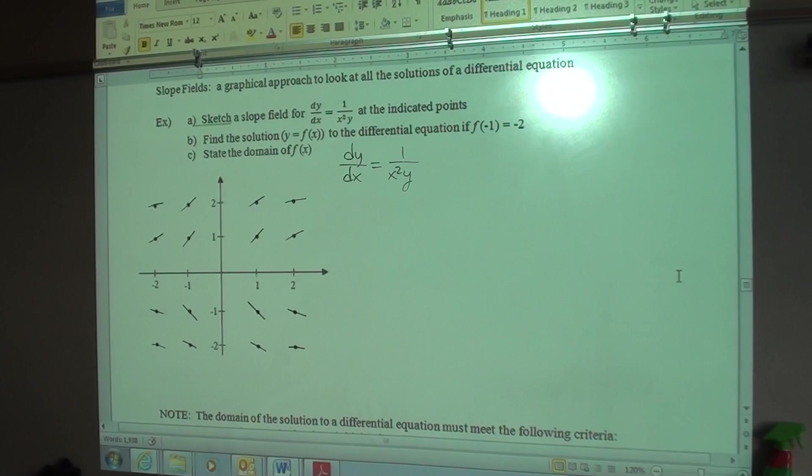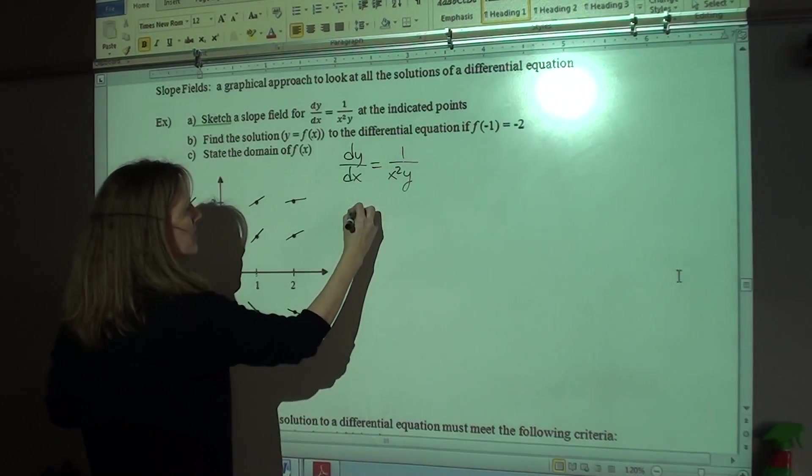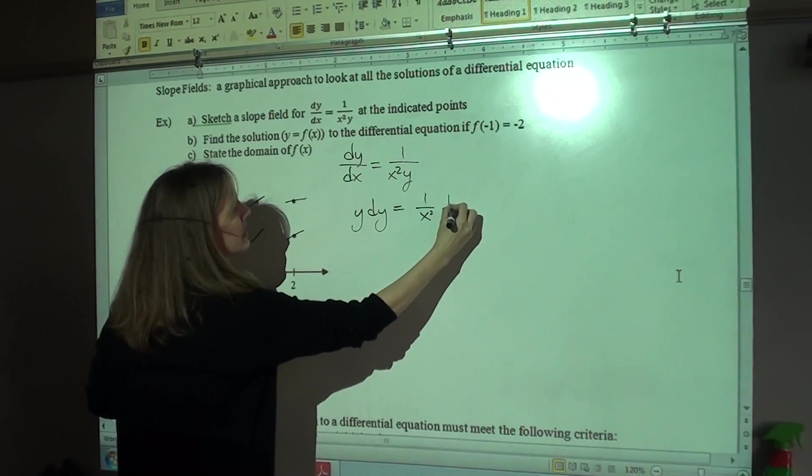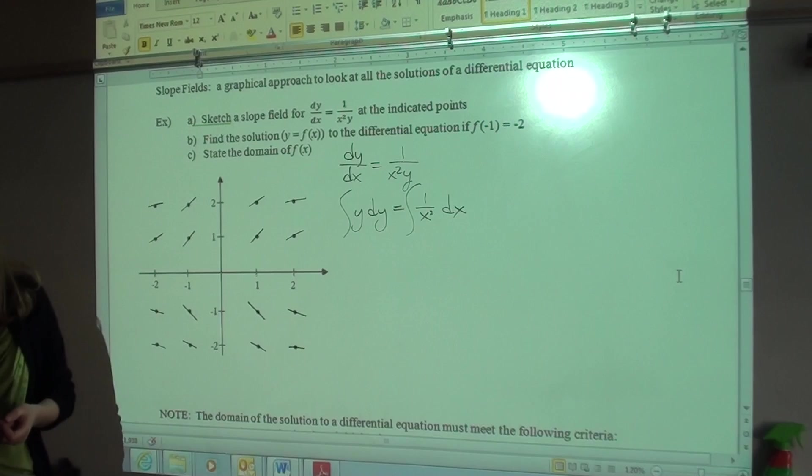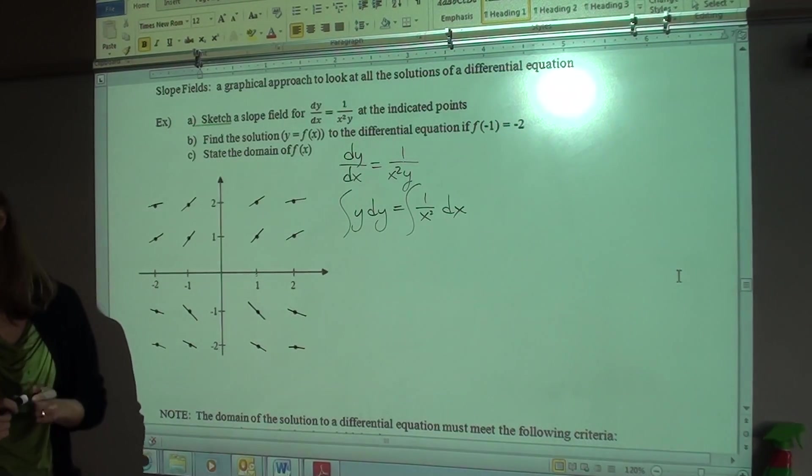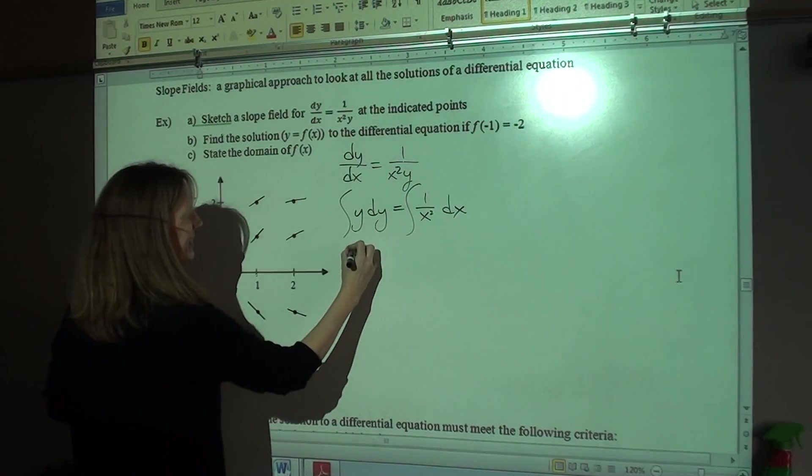So we've got our slope field sketch. The next thing we have to do is find the solution to the differential equation that passes through the point negative 1, negative 2. So in order to do this, we're going to have to separate the variables. So we get y dy equals 1 over x squared dx. What's the antiderivative of y? Oh, y dy. 1 half y squared. Very good.